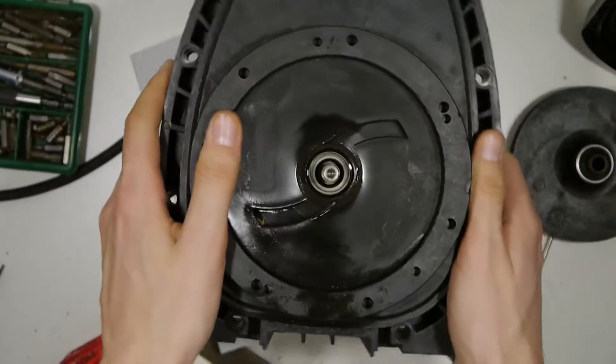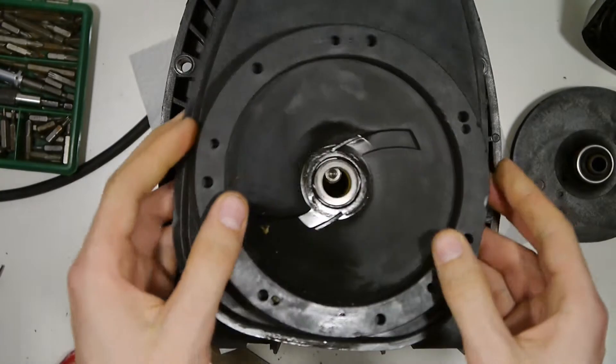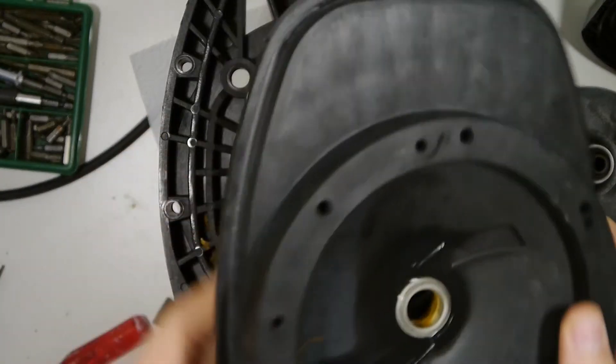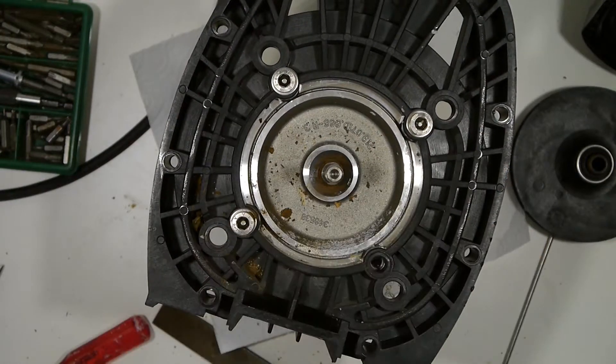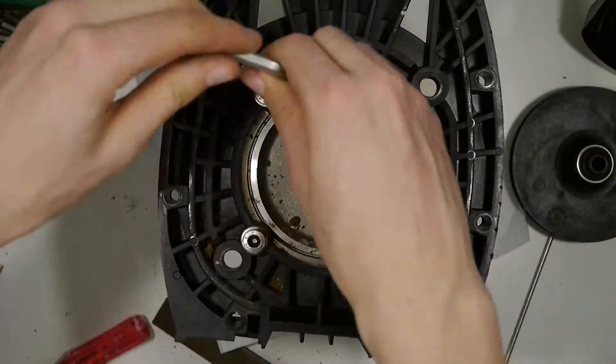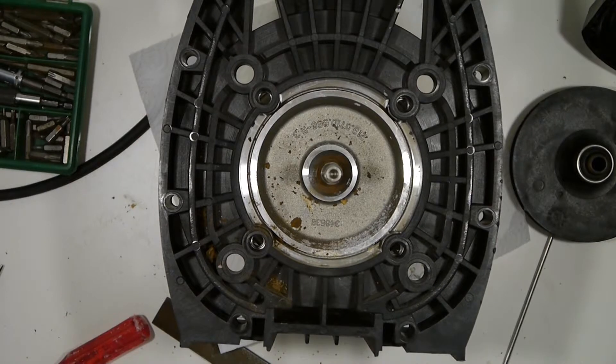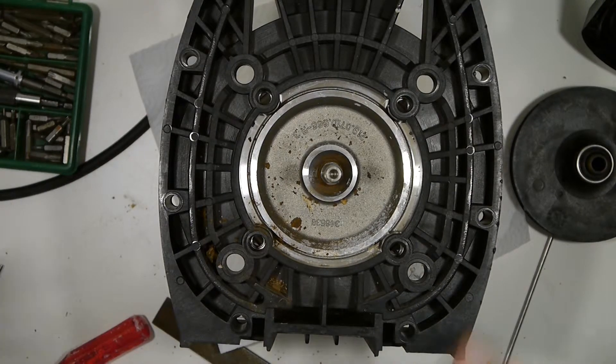After removing the plastic covering there are four screws revealed. When we open these we have successfully separated the motor from the plastic housing.